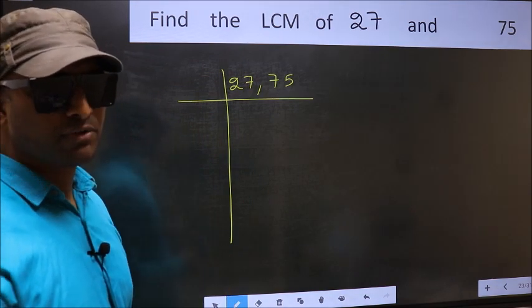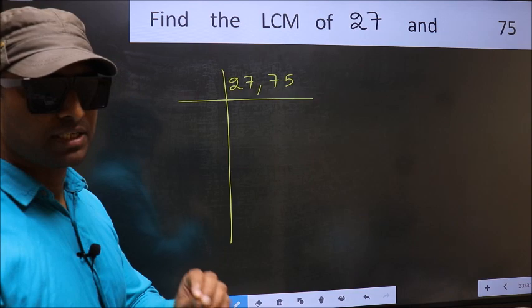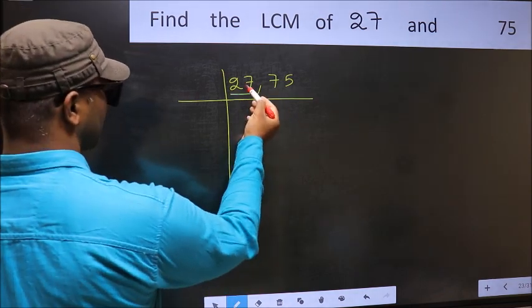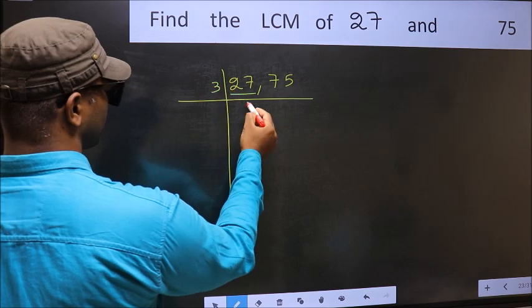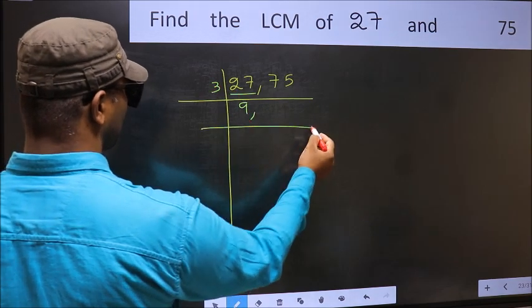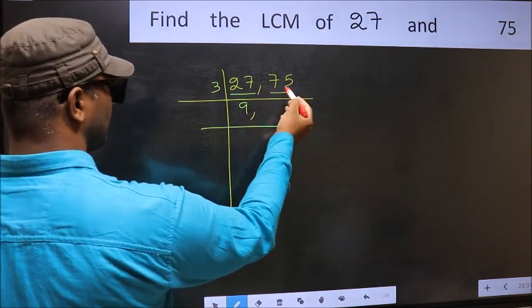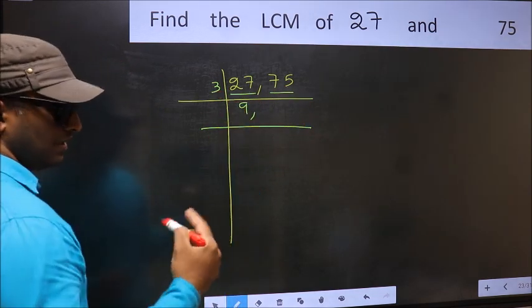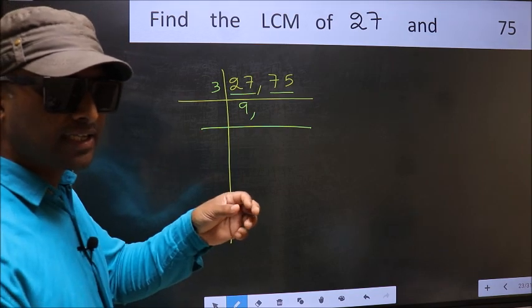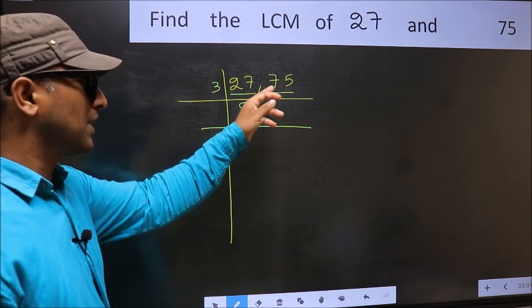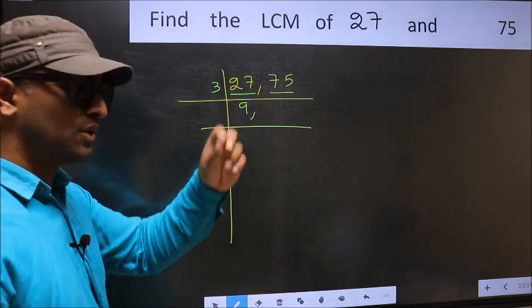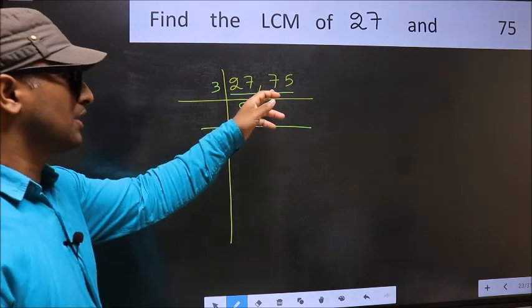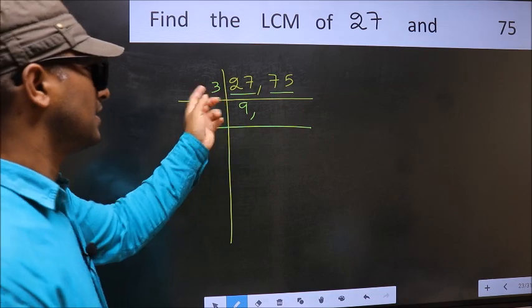Now focus on the first number, which is 27. 27 is 3 nines, which is 27. For the other number, 75, check whether it is divisible by 3 or not. Add the digits: 7 plus 5 gives 12, and 12 is divisible by 3, so 75 is also divisible by 3.